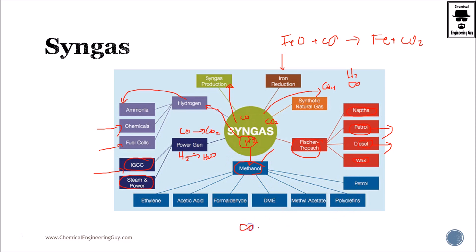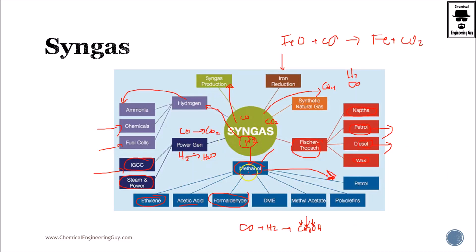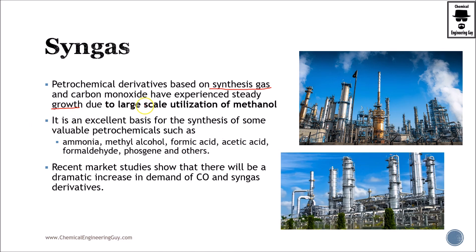We're going to see later on how to produce methanol and what the conditions are. Carbon, hydrogen, and oxygen are all present for methanol synthesis. We can use methanol to substitute or add to the petroleum pool — polyolefins, methyl acetate, but more commonly for ethylene, acetic acid, formaldehyde, and so on. Chemical derivatives based on syngas and carbon monoxide have experienced steady growth because they are easy to produce and very versatile.